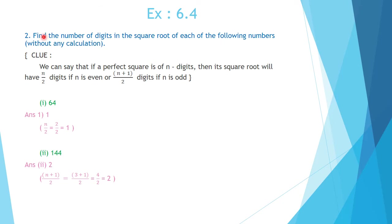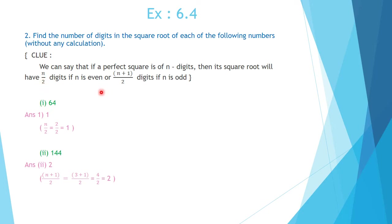Question number 2: find the number of digits in the square root of each of the following numbers without any calculation. We should know this point: when the number of digits in the given number is n and it is an even number, the number of digits in the square root is n by 2. When the number of digits is n and it is an odd number, the number of digits in the square root is n plus 1 divided by 2.